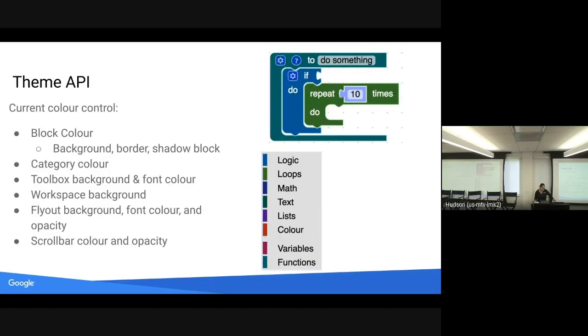Our theme API. Themes came out back in January, I think, and we had support for changing the block color and the background border and shadow block color and changing the categories.